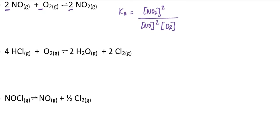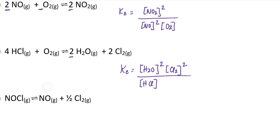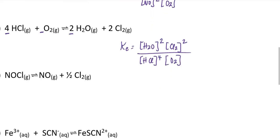For the next example, I would construct the equilibrium constant by taking the concentration of water vapor — since its stoichiometric coefficient is 2, I raise it to the second power — times the concentration of chlorine gas, also to the second power, divided by the concentration of hydrogen chloride. Notice the stoichiometric coefficient for hydrogen chloride is 4, so it is raised to the fourth power, multiplied by the concentration of oxygen, whose stoichiometric coefficient is 1, understood.